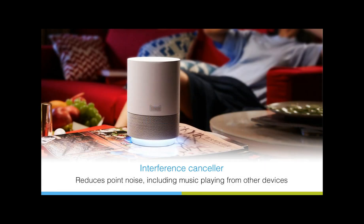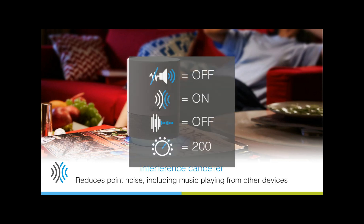The interference canceller scans the soundscape of the room and reduces the output from static audio sources, also known as point noise sources, like kitchen appliances, smart speakers, and audio equipment. The following clip shows the effects of the interference canceller on a recording of a track playing on a separate audio device in the room. The AEC and noise suppression have been turned off and gain set to a default value.